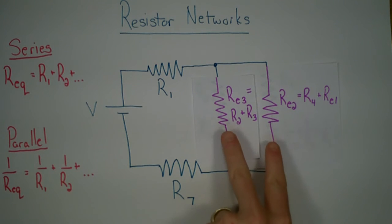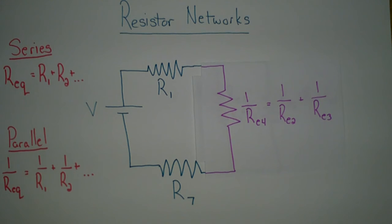We can now see that RE2 and RE3 are in parallel with each other, so we can simplify those with 1 over RE4, which equals 1 over RE2 plus 1 over RE3.